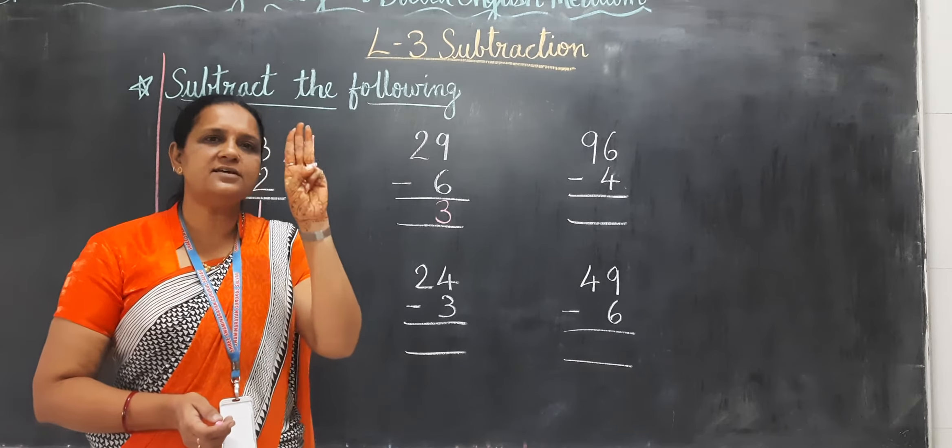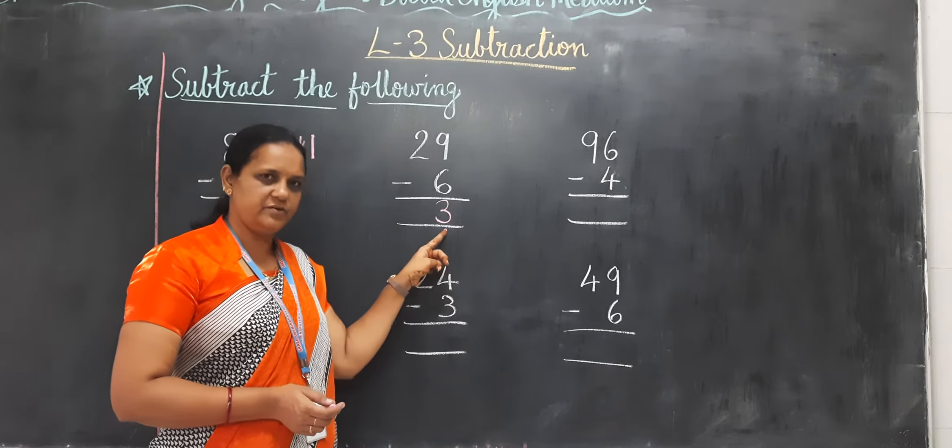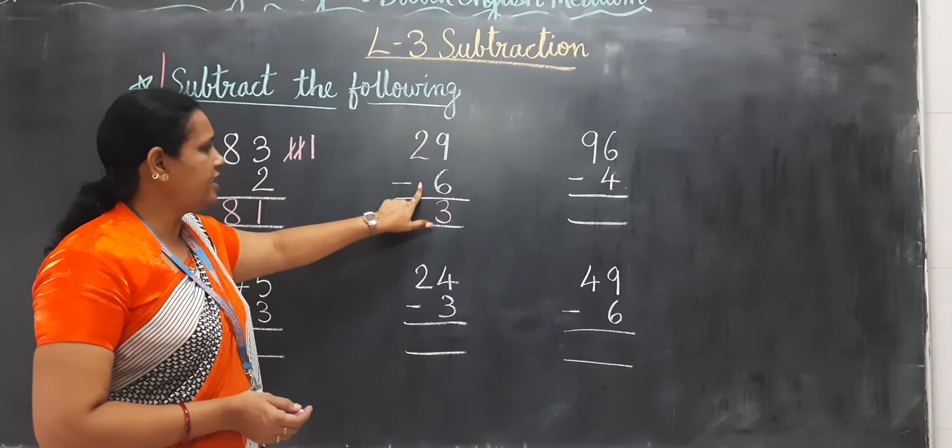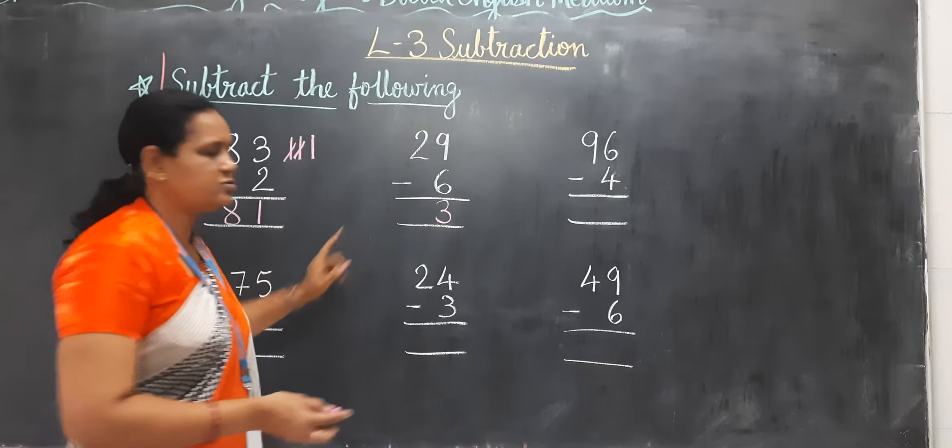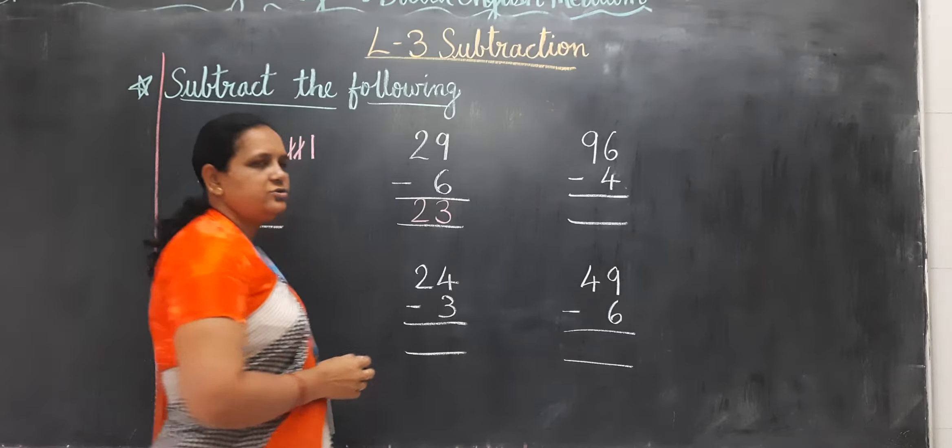8 and 9. Now how many fingers? 3. So put direct 3. Now 2. Any number is here? No. So you have to write direct 2.